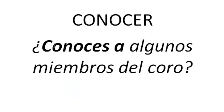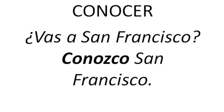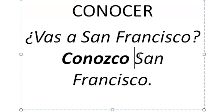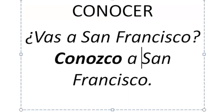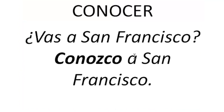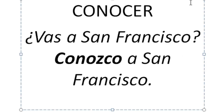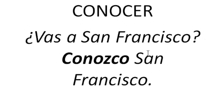¿Conoces a algunos miembros del coro? — You know some members. Remember, this is the personal A; when we're talking about people, we throw in that A. ¿Vas a San Francisco? Conozco San Francisco — I know San Francisco, I'm familiar with it, I've been there. Now if we added the A — Conozco a San Francisco — that personal A would mean I know the person St. Francis. Since we're talking about the city, we leave the personal A out: Conozco San Francisco.